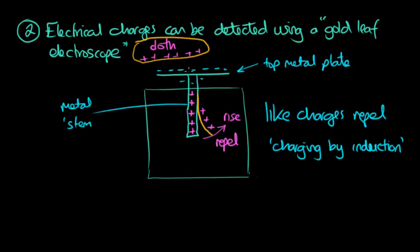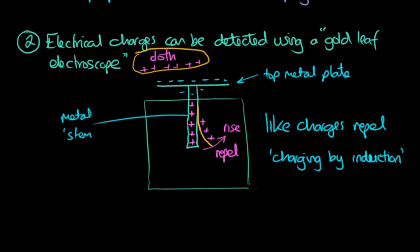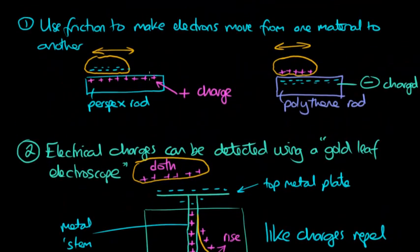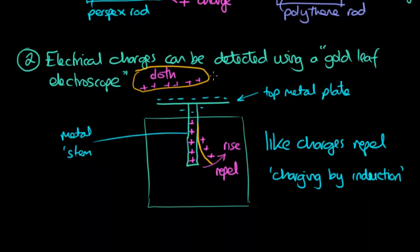So there are two experiments you can describe: to produce electric charge by using friction and detect electric charge by using a gold leaf electroscope.